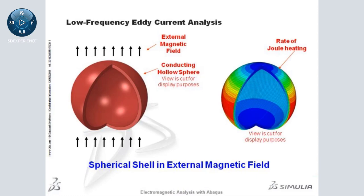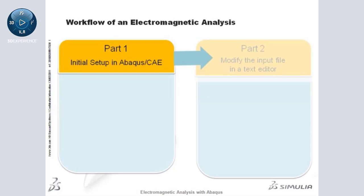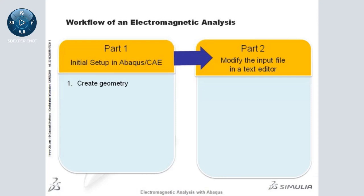Here is a resulting contour plot of the rate of joule heating generated by the induced current. Eddy current analysis is not currently supported in Abaqus CAE. Therefore, while the workflow to generate an electromagnetic model can begin in Abaqus CAE, the resulting input file will require subsequent modifications in a text editor.